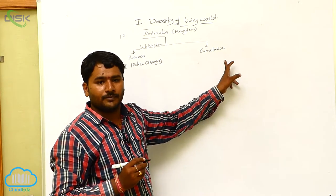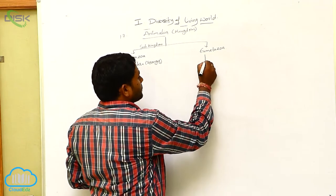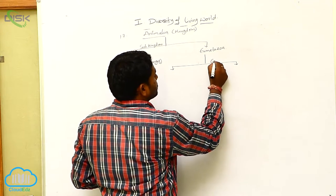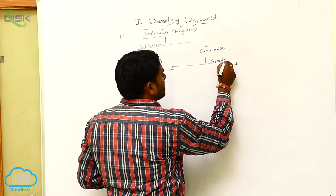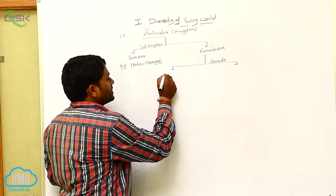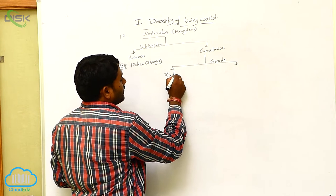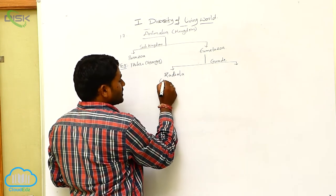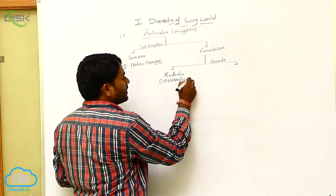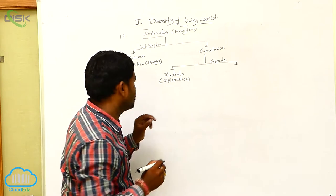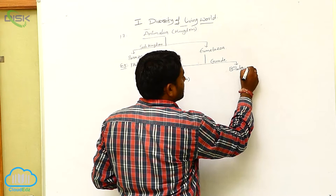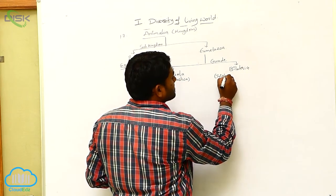Next is Eumetazoa, which is further divided into two grades. The first grade is Radiata, which is also known as Diploblastica. The second grade is Bilateria, which is also known as Triploblastica.